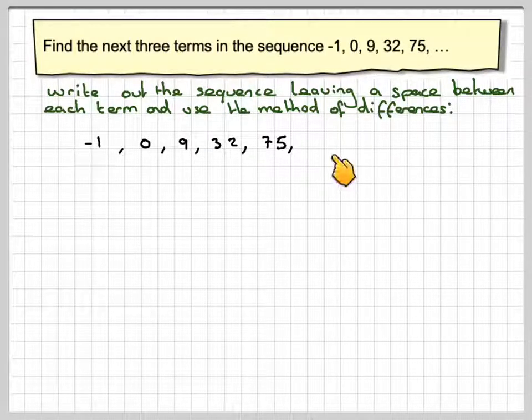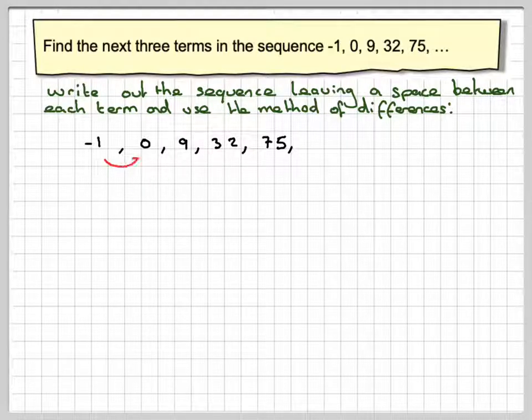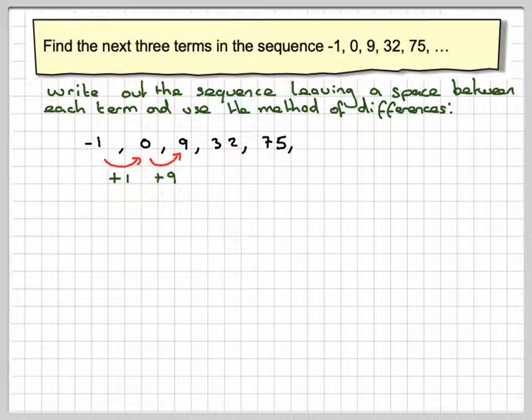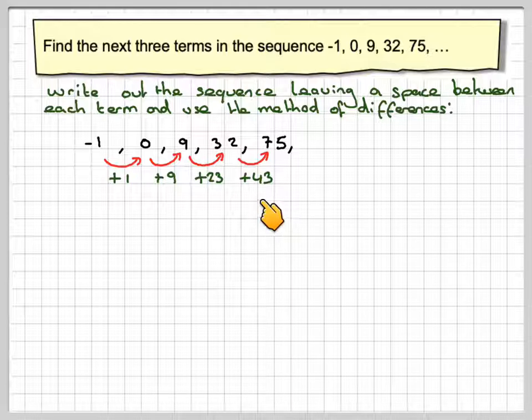Don't put the three dots at the end because we're going to add the next three terms here. Right, if we do the method of differences, between minus 1 and 0 we add 1, from 0 to 9 we're going to add 9, from 9 to 32 we have to add 23, and from 32 to 75 we get 43. You can get those numbers by doing 75 minus 32, 32 minus 9, 9 minus 0 and 0 minus minus 1.